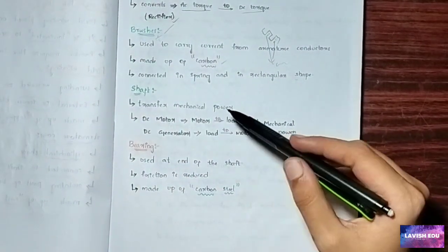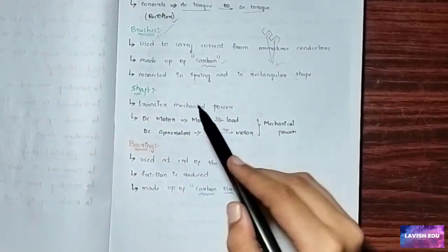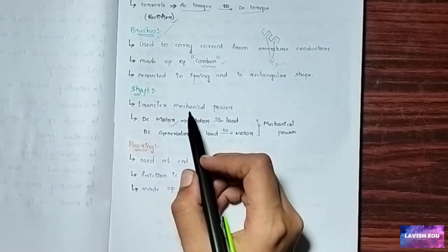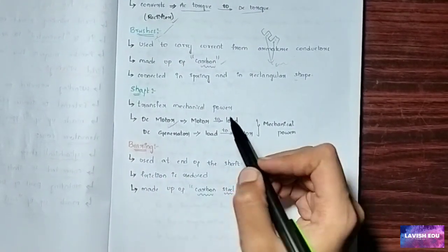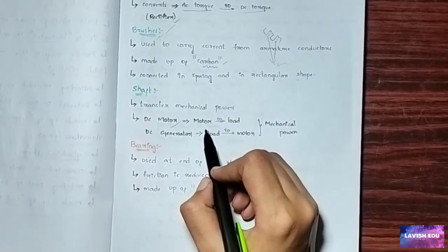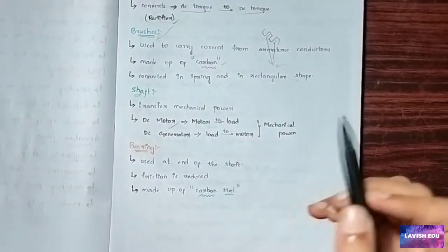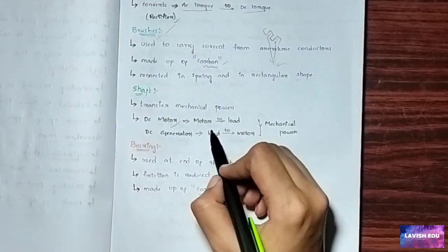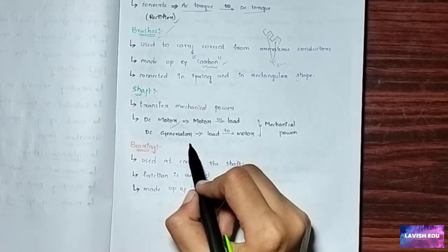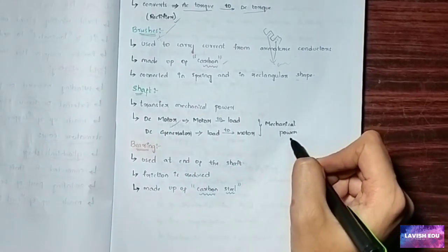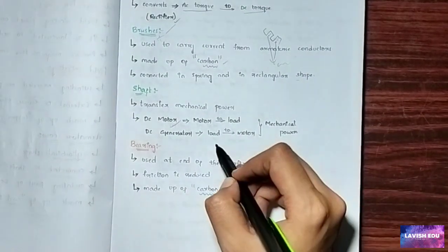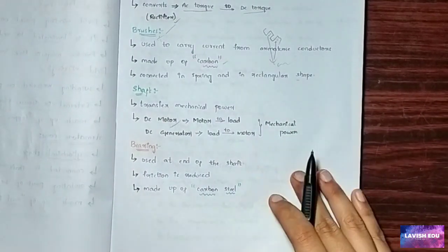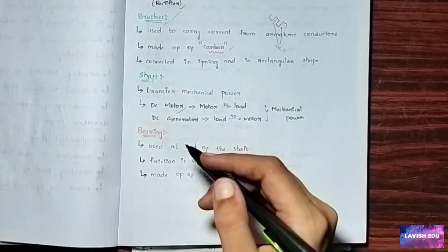What is the shaft? The shaft transfers mechanical power. In a DC motor, it transfers mechanical power from the motor to the load. In a generator, it transfers mechanical power from the load to the motor.